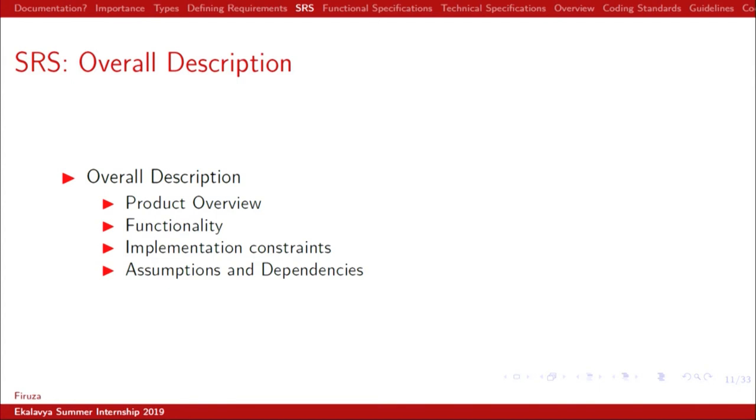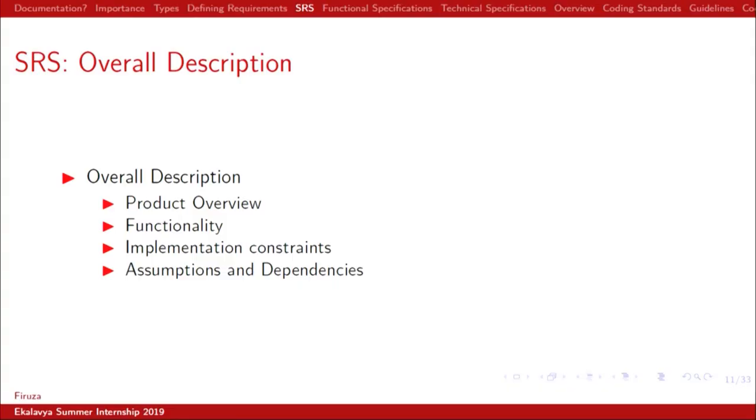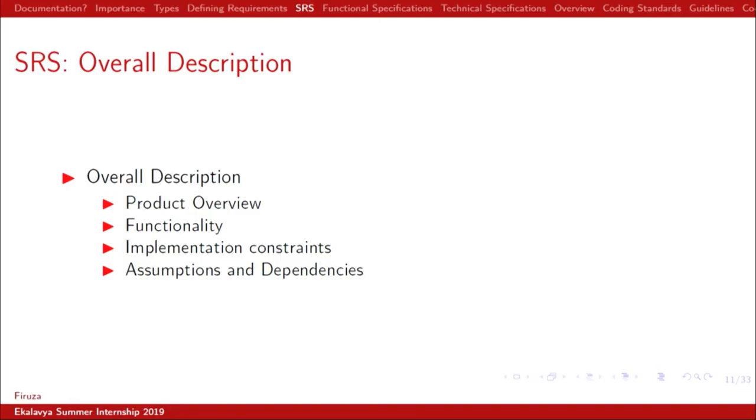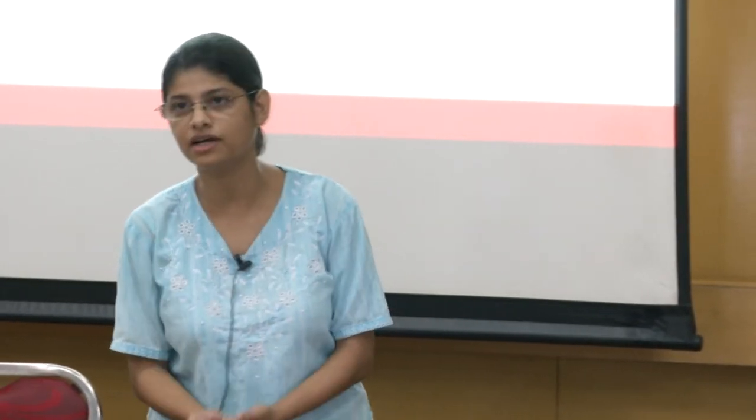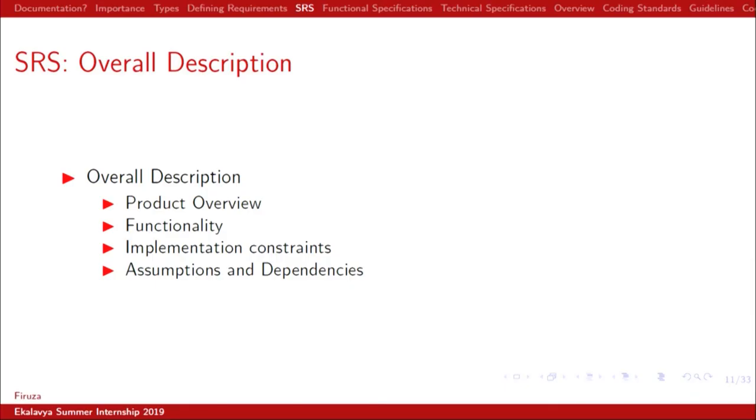Then comes the overall description. Under overall description, starting with a product overview — what we wrote in the scope of the project, we now expand in more detail. Functionality — we list down the features like find and replace, annotating, just a list, not in detail. Implementation constraints — which technology will be used, we are writing in Java, using these APIs, what OS is required such as Windows or Ubuntu. Assumption and dependencies — what is needed to install the system.